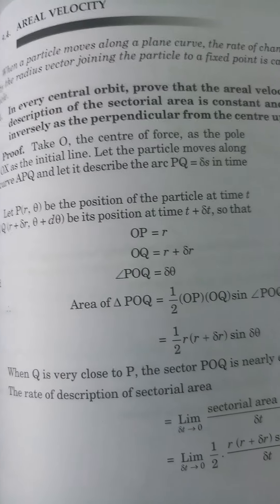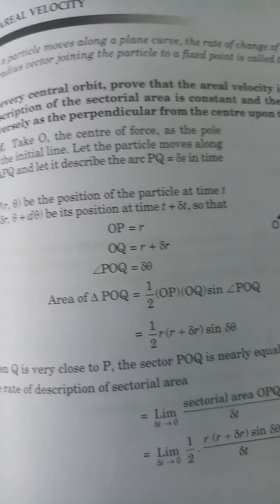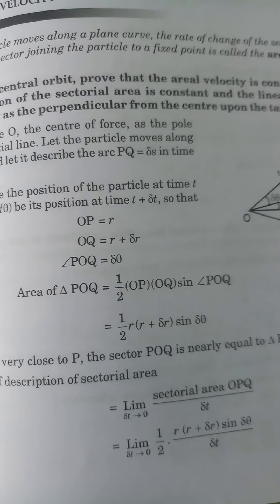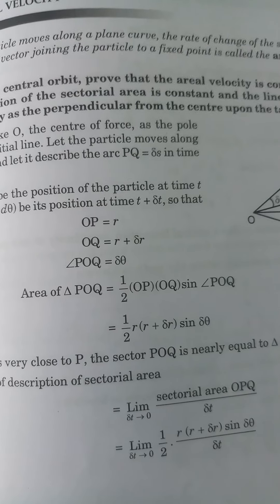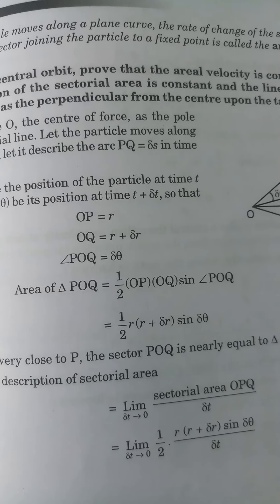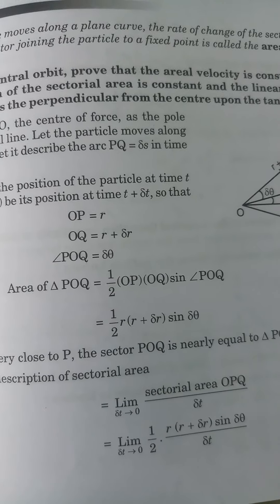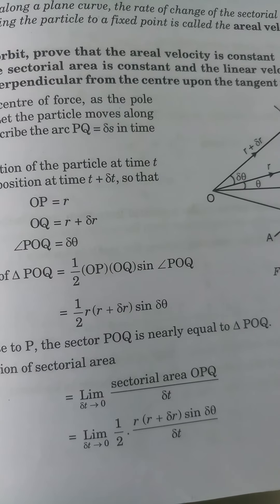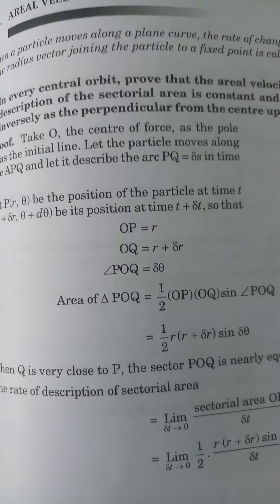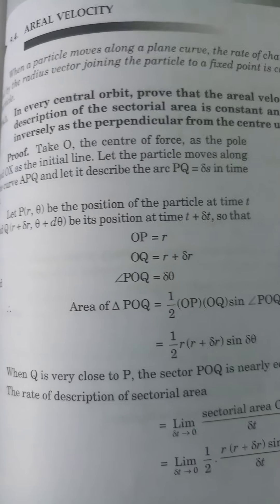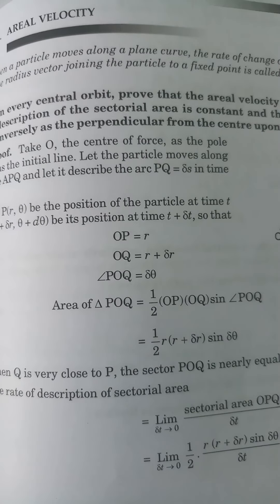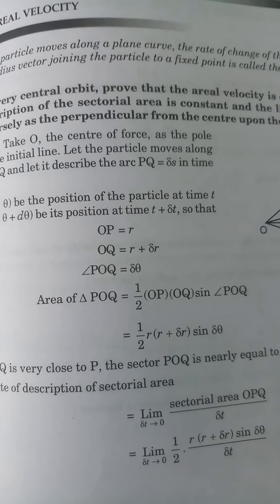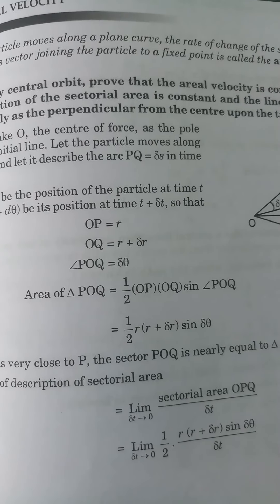Therefore, the area of triangle POQ is equal to ½ · OP · OQ · sin(∠POQ), which equals ½ · r · (r + δr) · sin(δθ).